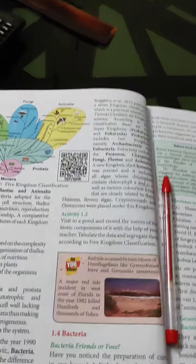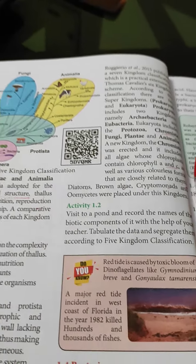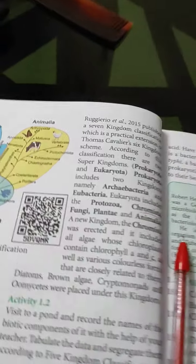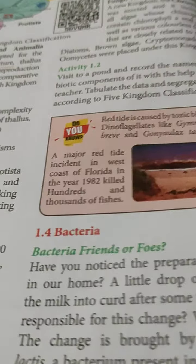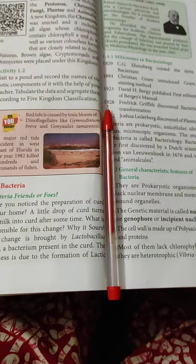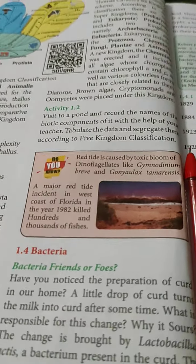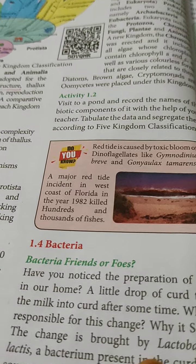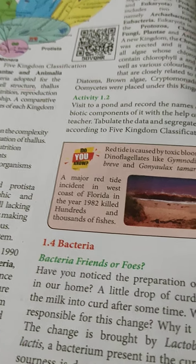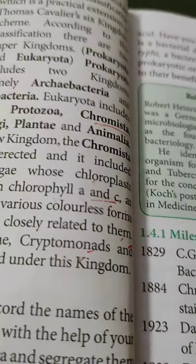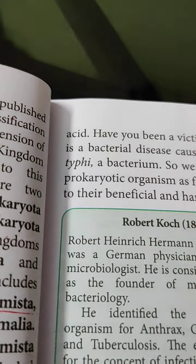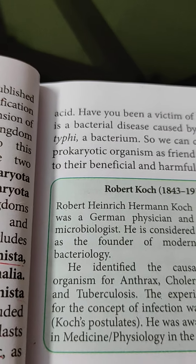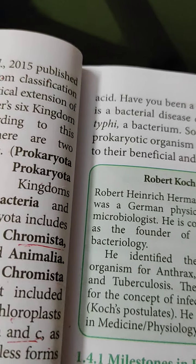Next, we will discuss the different organisms in the plant kingdom, beginning with bacteria. Bacteria are both friends and enemies to us. We get products from bacteria — for example, curd is obtained from Lactobacillus lactis. At the same time, bacteria cause diseases; for example, Salmonella typhi causes typhoid. So bacteria are both beneficial and harmful.